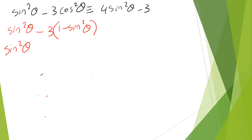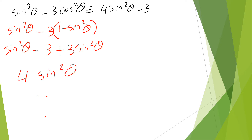Now expand. Collect like terms. Now proven. So when proving the identity, the first step is quite important. How do I come up with the first step? It's by looking at what the other side has. This side has only cosine, this has sine and cosine — that's why I'm trying to convert. Look for the identity that helps me convert the cosine into sine.